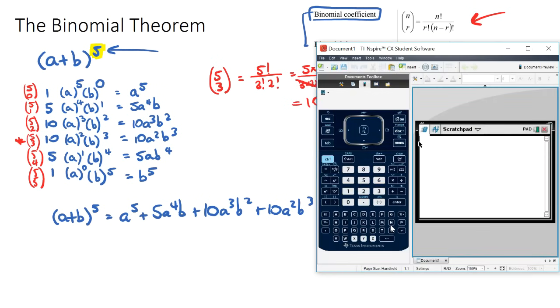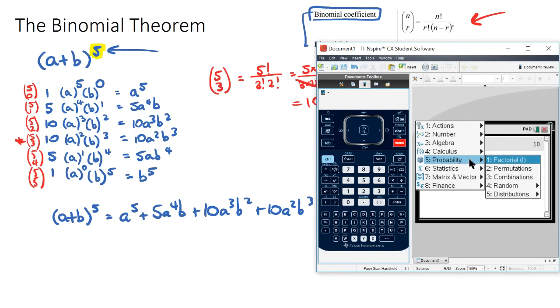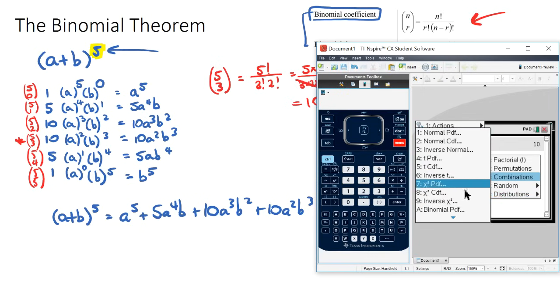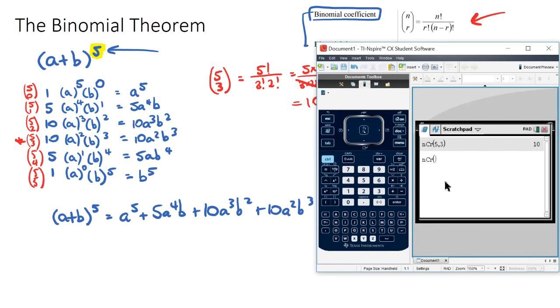If you have a calculator that looks like my one here, you can actually just type in ncr and put five, three and it gives you ten. If you have a different calculator it's usually in the probability section, in the combination section ncr.